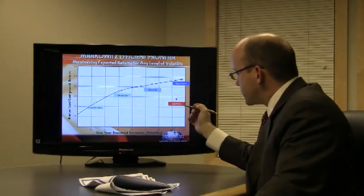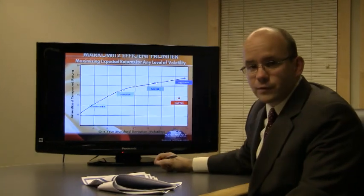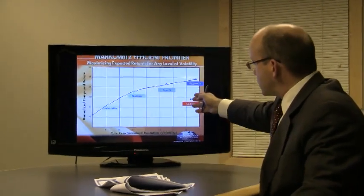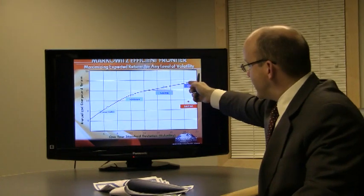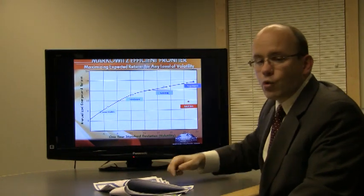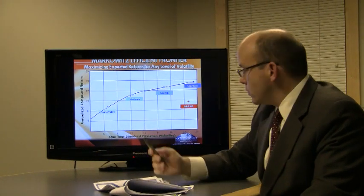So Markowitz's Efficient Frontier tells us, well, if you're comfortable with that level of risk, there's actually a much more efficient portfolio for you to get almost 3% more return per year.